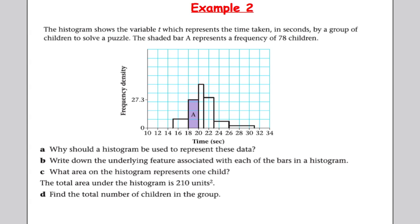Let's have a look at a more complicated example. We're given a histogram with a variable t for time, and it tells me that the shaded bar A represents 78 children. This is one of these examples where the constant k is not equal to 1. Let's go through the answers. Why should a histogram be used to represent the data? Simply unequal class widths. The intervals are not equal. That's why we should use a histogram. Write down the underlying feature associated with each of the bars in the histogram. That's simply that the area is proportional to the frequency.